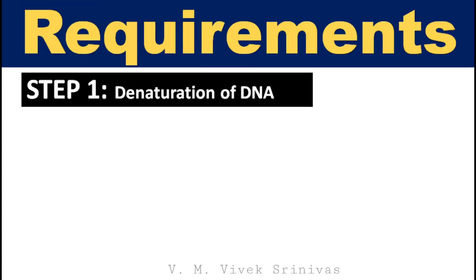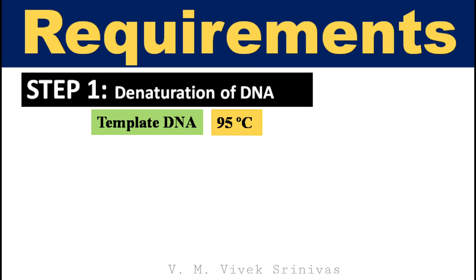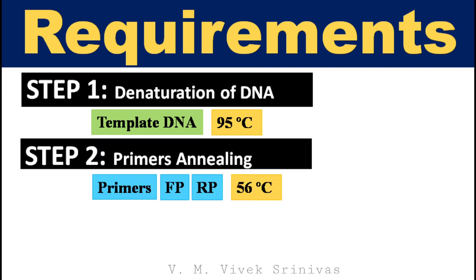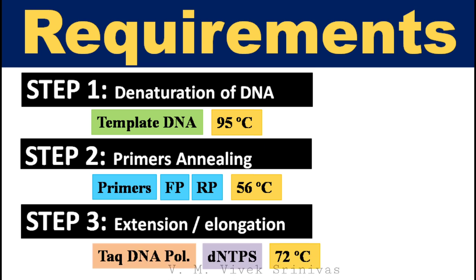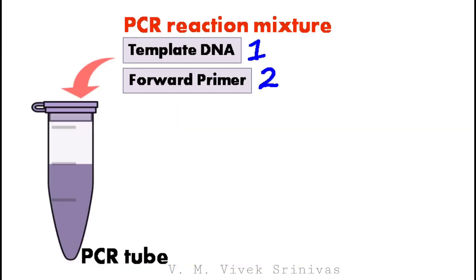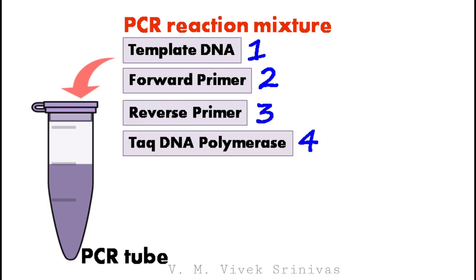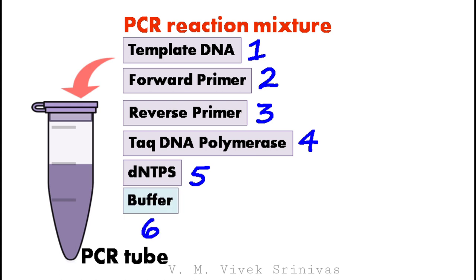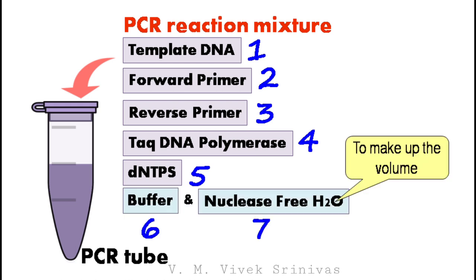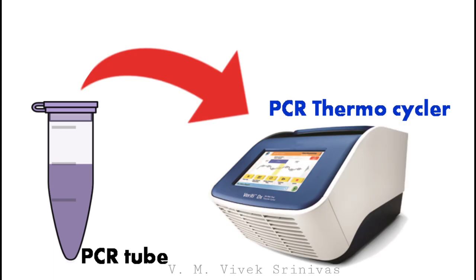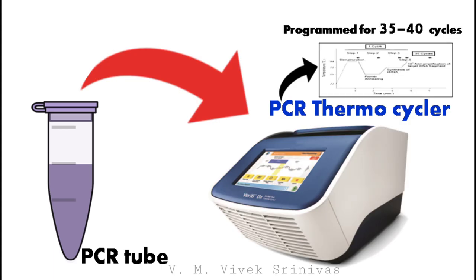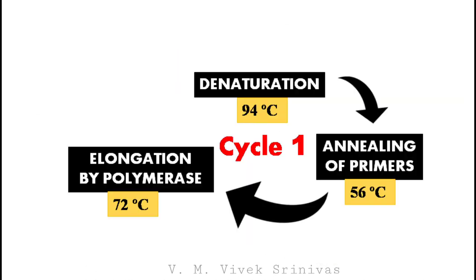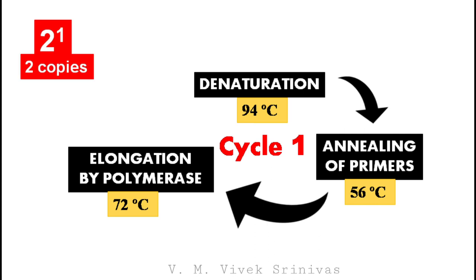Requirements: for denaturation — template DNA and 95 degrees Celsius; for annealing — forward and reverse primer pair and 56 degrees Celsius; for elongation — dNTPs, Taq DNA polymerase, and 72 degrees Celsius. All required components — template DNA, forward primer, reverse primer, Taq DNA polymerase, dNTPs, buffers, and nuclease-free water — are placed in a PCR tube, which is then loaded into the thermocycler and programmed for temperature and number of cycles.